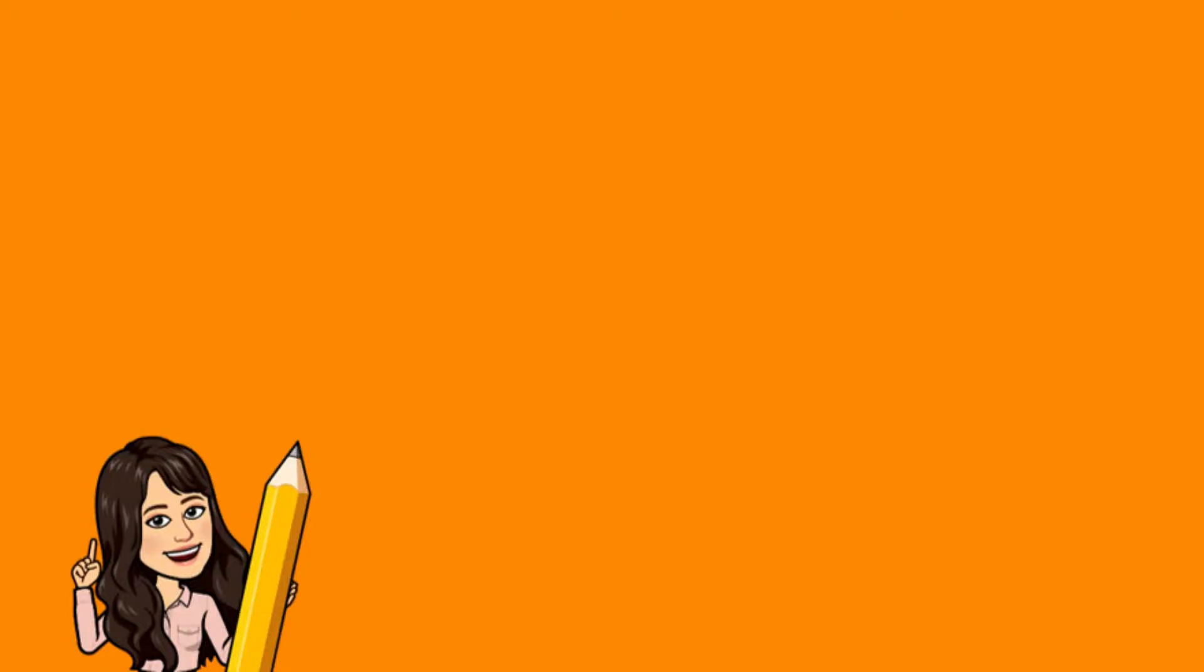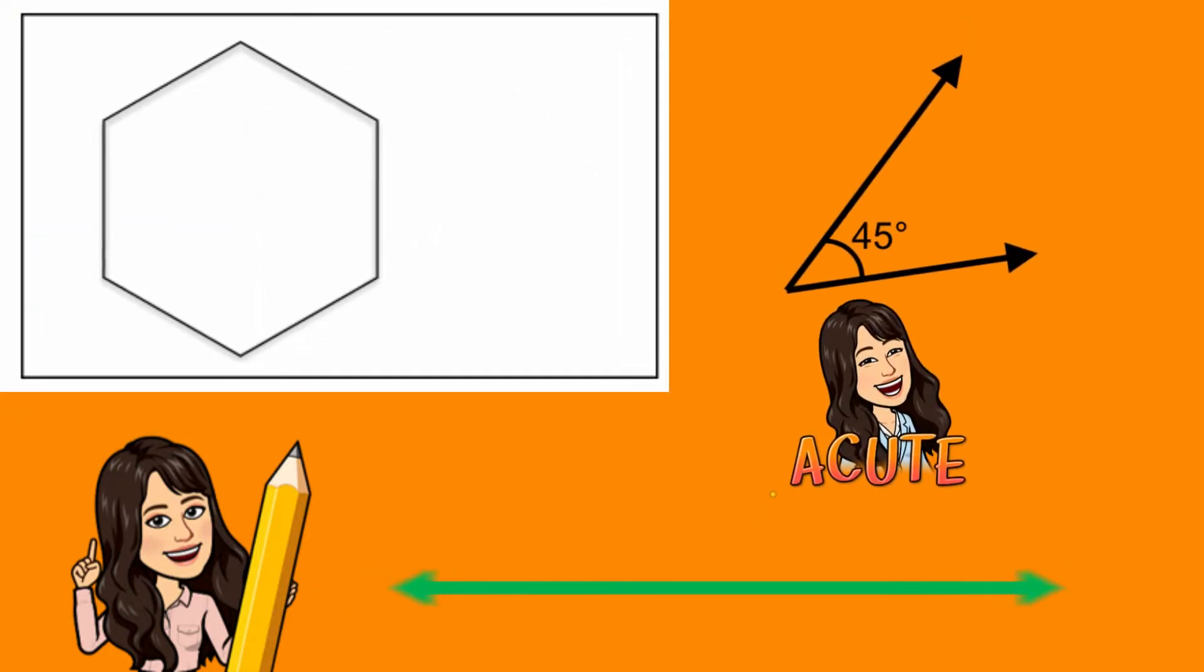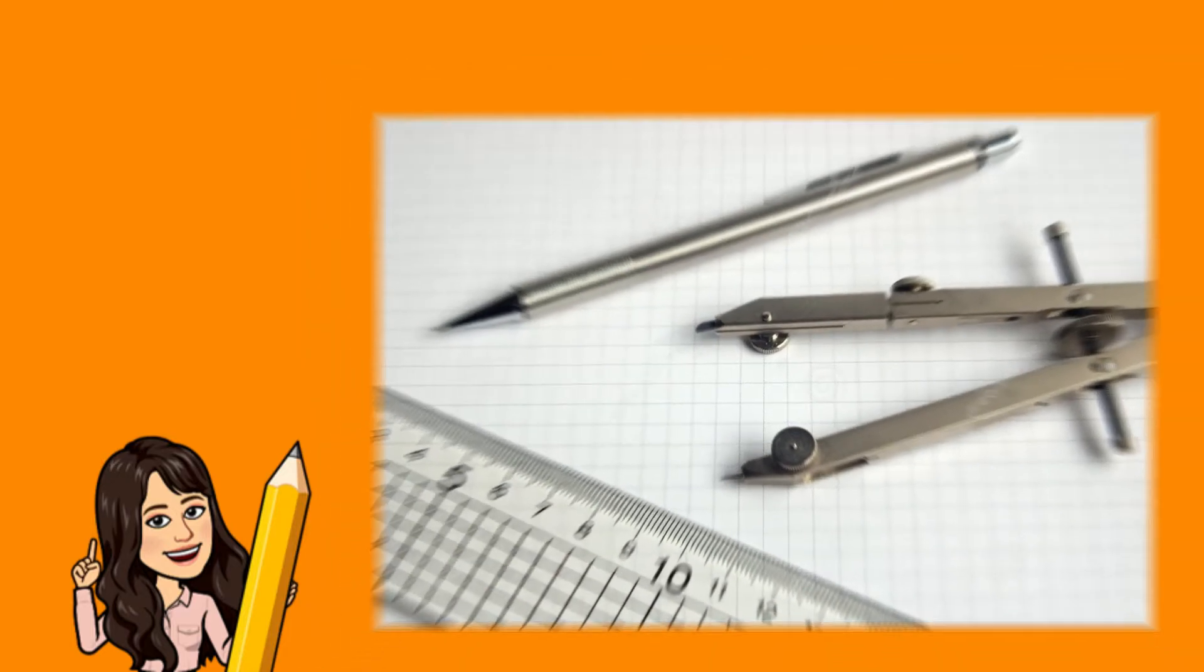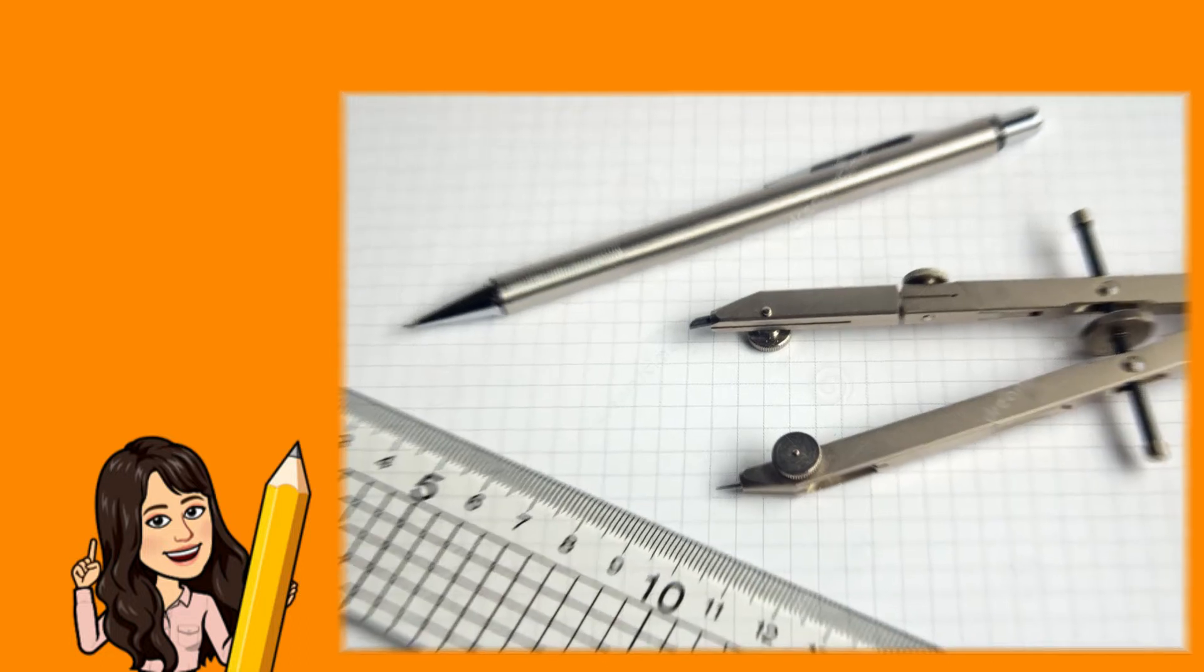Constructions in geometry means to draw shapes, angles, or lines accurately. These constructions use only compass, straight edge, for example ruler, and a pencil. In drawing the geometric shapes, we need to use some geometrical tools.